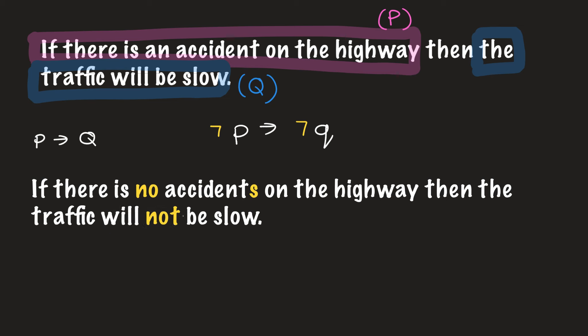Now, the inverse is not necessarily true all the time — there will be cases where it may not be. Think about it logically: if there are no accidents on the highway, will traffic definitely not be slow? Can you think of other reasons why traffic would be slow that are not connected to accidents? Construction, for example. So there are situations where this is not going to be true, meaning if P then Q is not logically equivalent to not P then not Q.